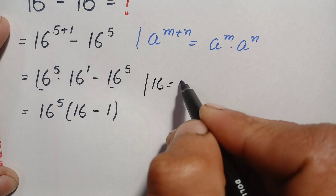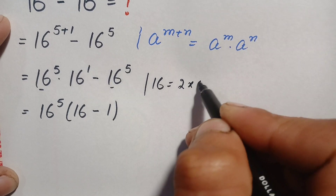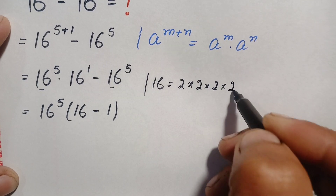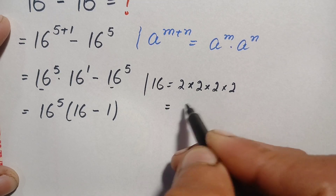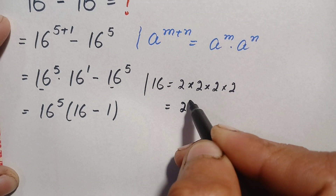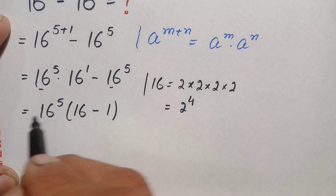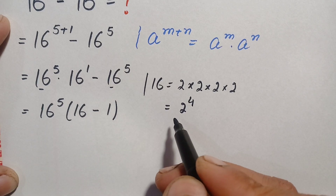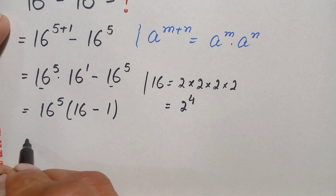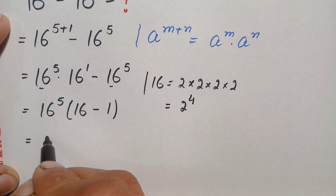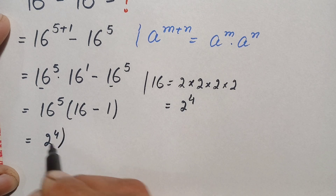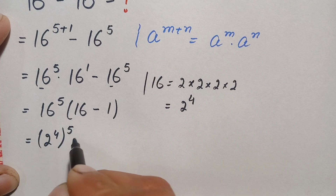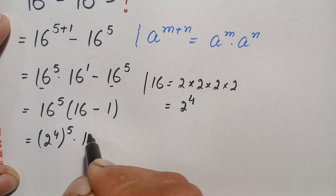We can write 16 as 2 × 2 × 2 × 2, which means 16 equals 2 to the power 4. Replacing 16 with 2 to the power 4, the expression becomes (2 to the power 4) to the power 5, times 15, since 16 minus 1 equals 15.